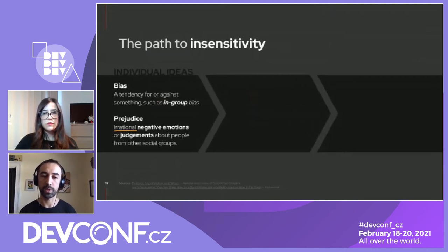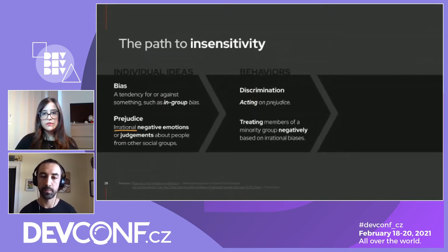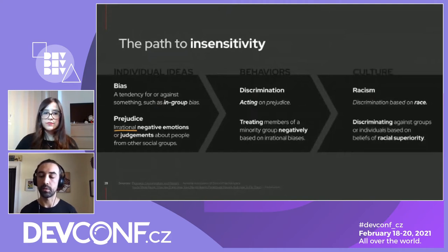Let's focus on the word irrational — we'll be coming back to address what feeds that irrationality. When we take these ideas and collect them into behaviors, then we start acting on that prejudice — that is discrimination. That's when we treat minority members negatively based on irrational biases and prejudice. And if we start collecting these behaviors, that starts turning into a culture of racism: discrimination based on race, discriminating against others based on beliefs of racial superiority.